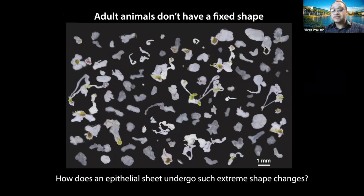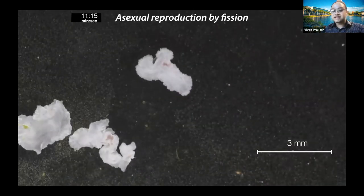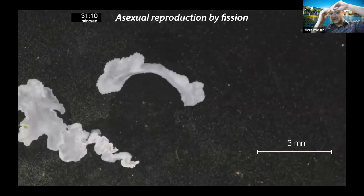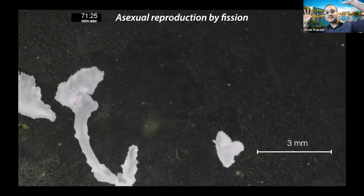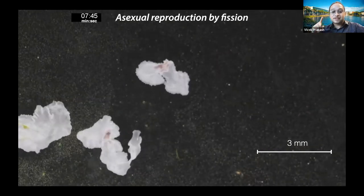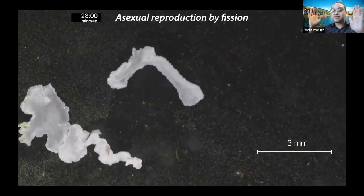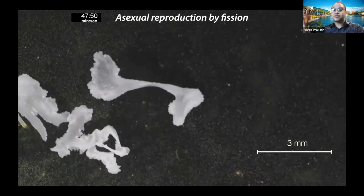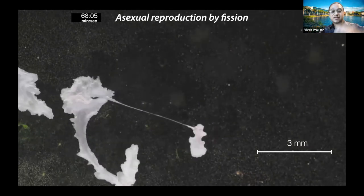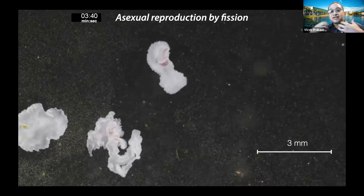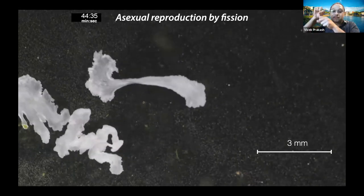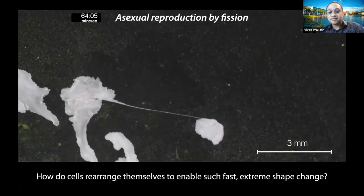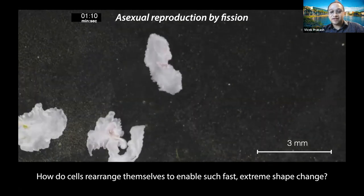So the question is: how do epithelial sheets undergo such extreme shape changes? Another fascinating phenomenon is reproduction. The animal forms two regions which start pulling away from each other, forming a small thread. This process is extremely fast — about one hour for a three-millimeter-size animal — with millions of cells coordinating to accomplish this task. Faster than most biological processes you can think of. We hypothesized that mechanics is playing a huge role. We looked for local cell rearrangements, asking: how do cells rearrange themselves to enable such fast shape change?